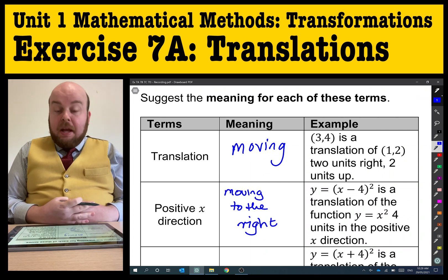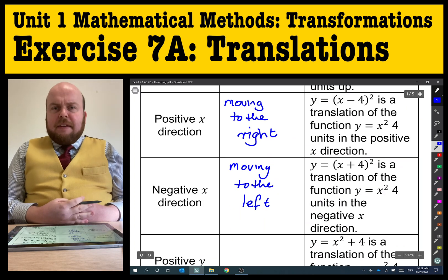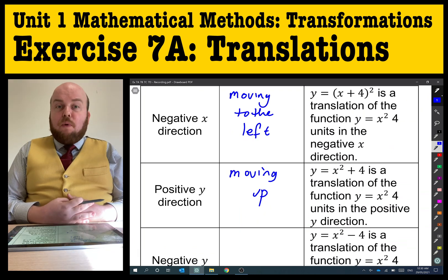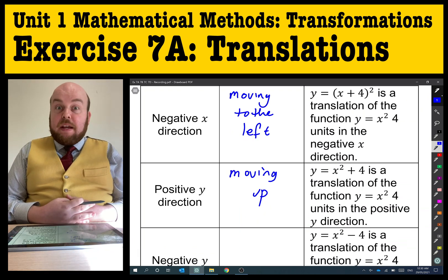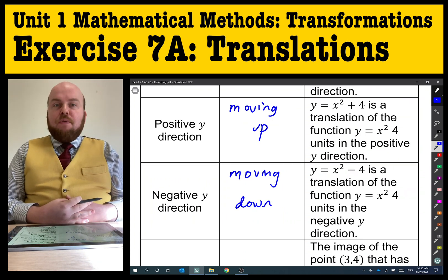Positive x direction just means we're moving a graph to the right. Negative x direction means we're moving something to the left. Positive y direction means moving up. Negative y direction means we're moving it down.